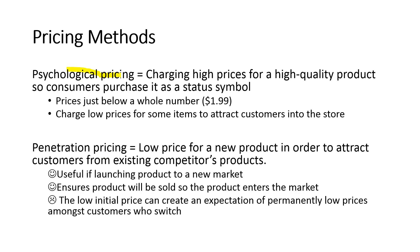Psychological pricing is another way of pricing, where you charge high prices for high quality products. Prices are set below a whole number, for example £1.99. Some people use this to charge lower prices for some items in the supermarket. Penetration pricing is where low prices are set for a new product in order to attract customers from existing competitors, and it is useful if you're launching a product to a new market. The downside is that a low initial price can create an expectation of permanently low prices among customers.